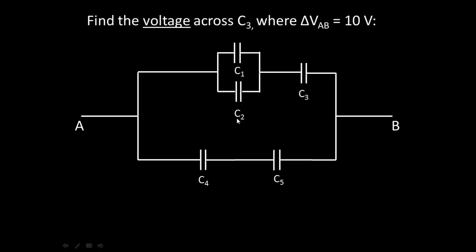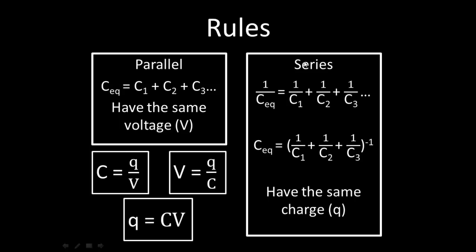Let's go ahead and find the voltage across C3, where delta V, or the potential difference between points A and B, equals 10 volts. Notice this is C3 right here, but before we begin, let's go over some basic rules for capacitors.